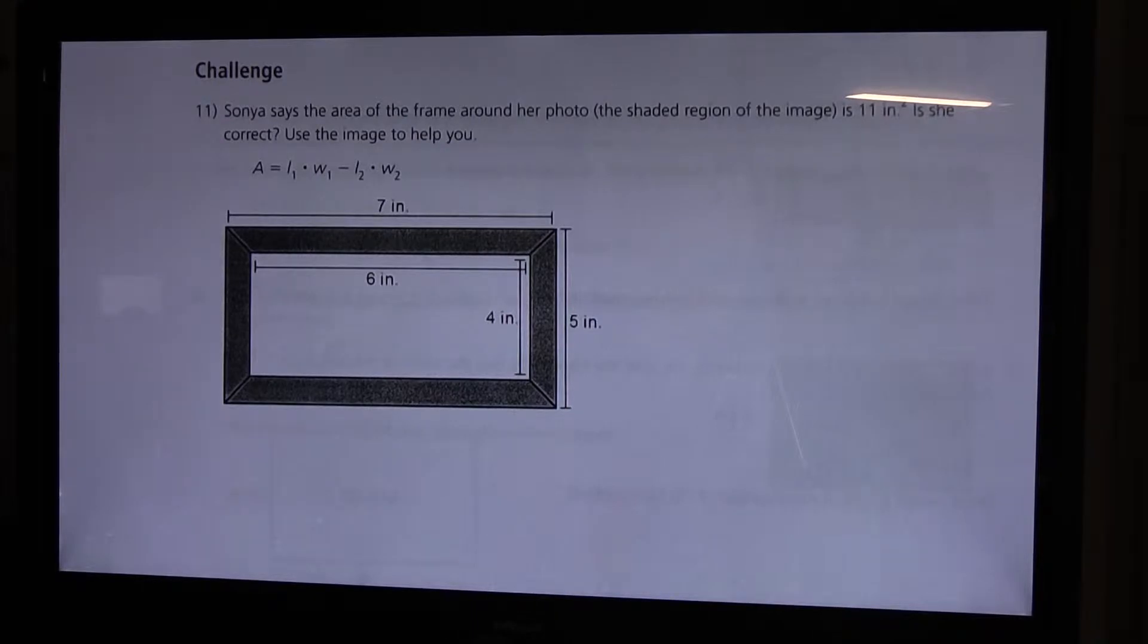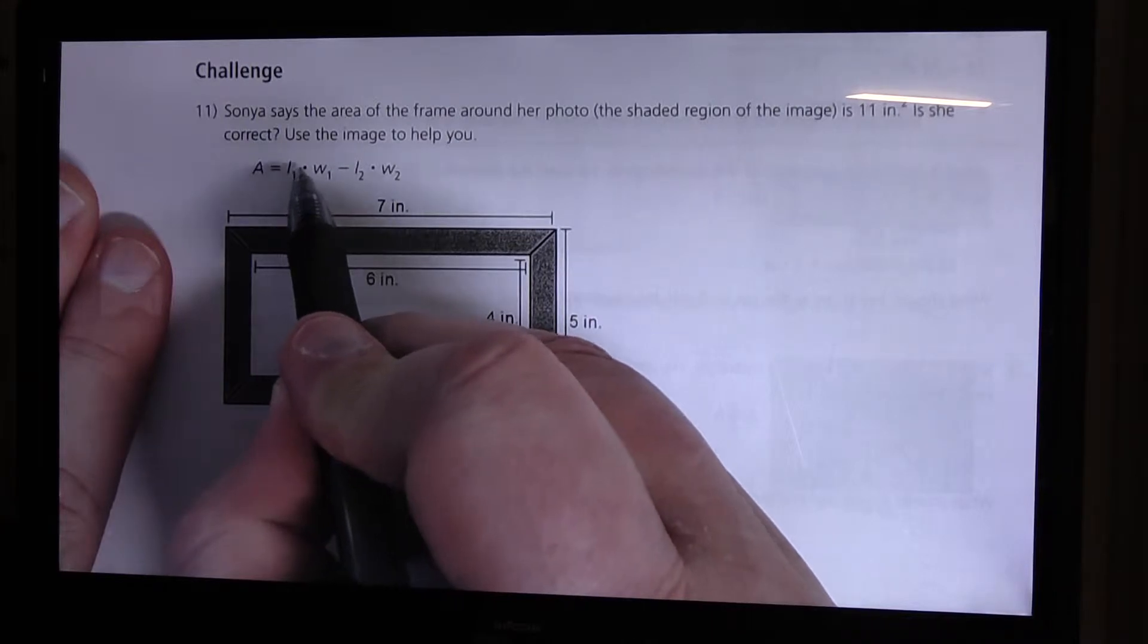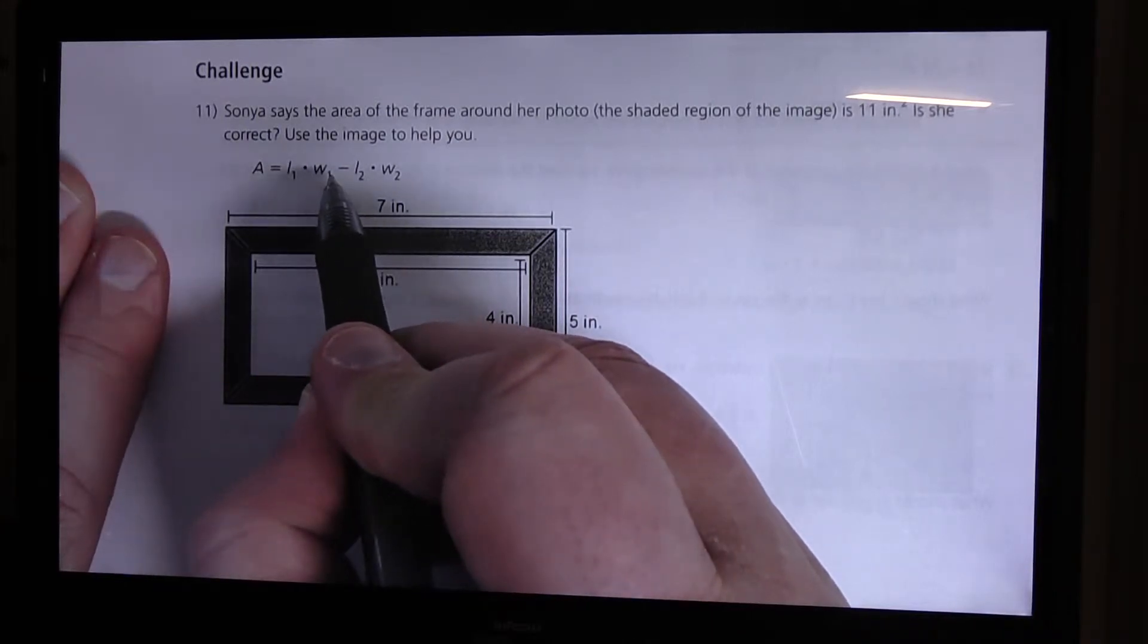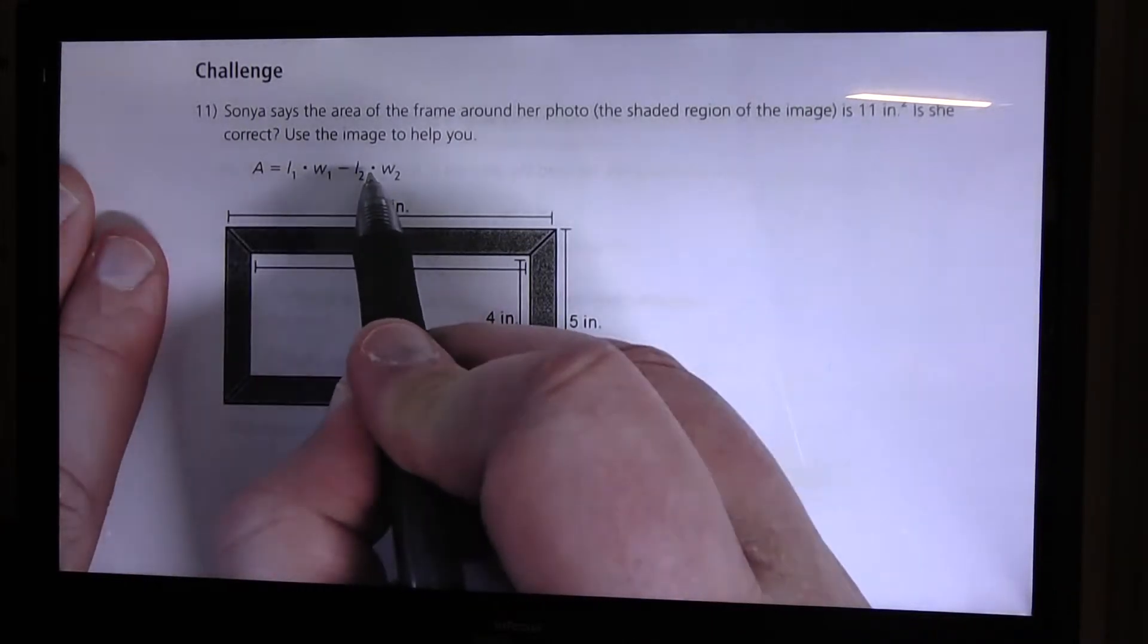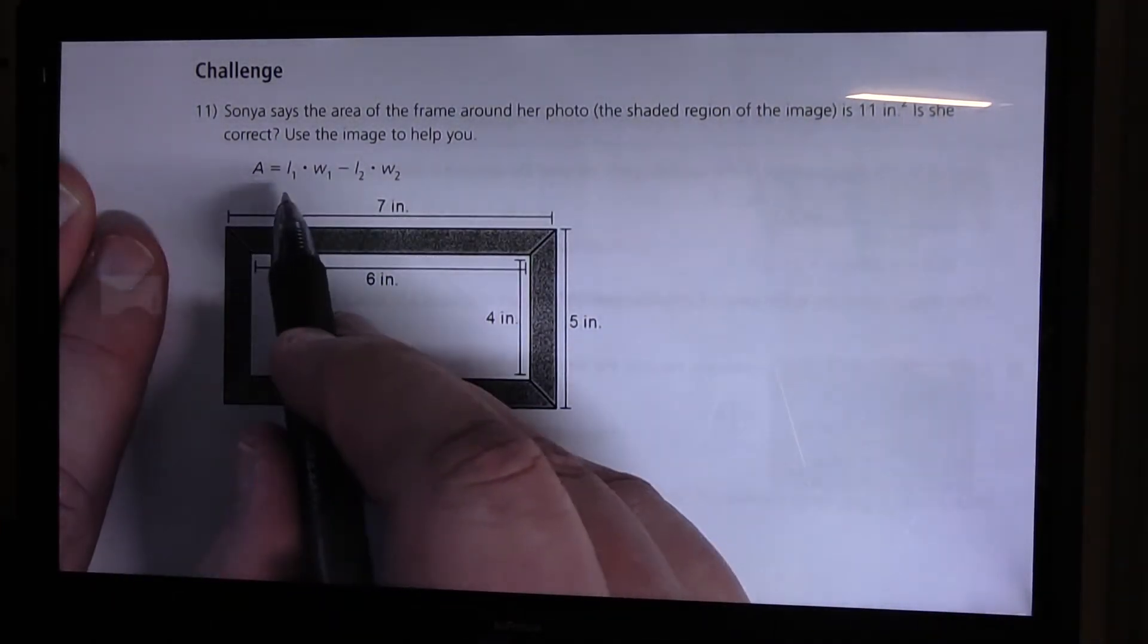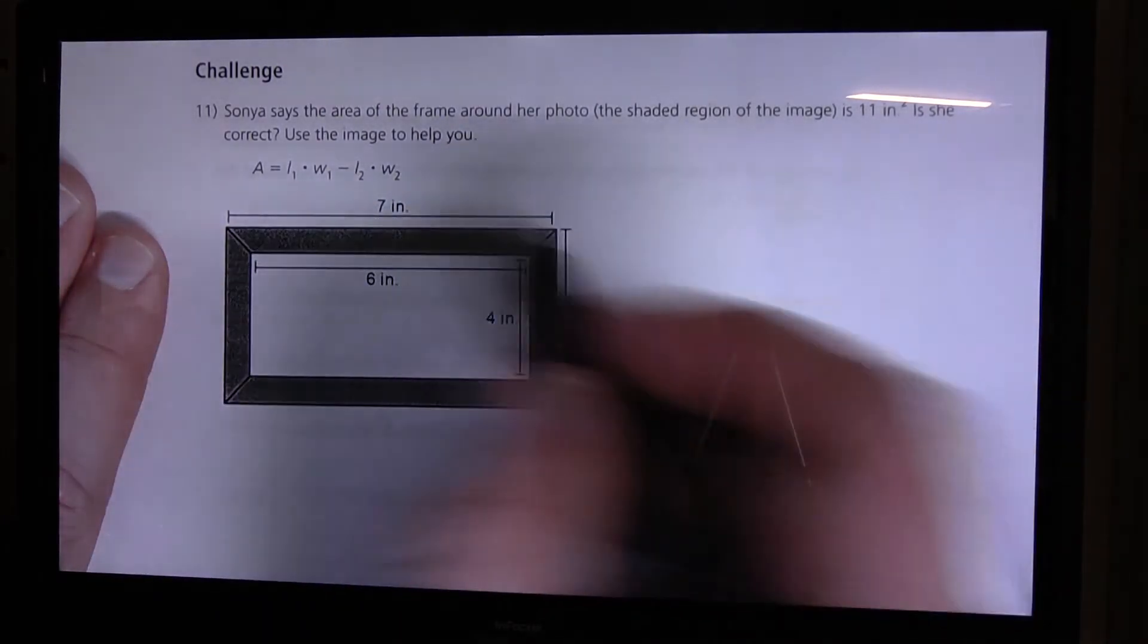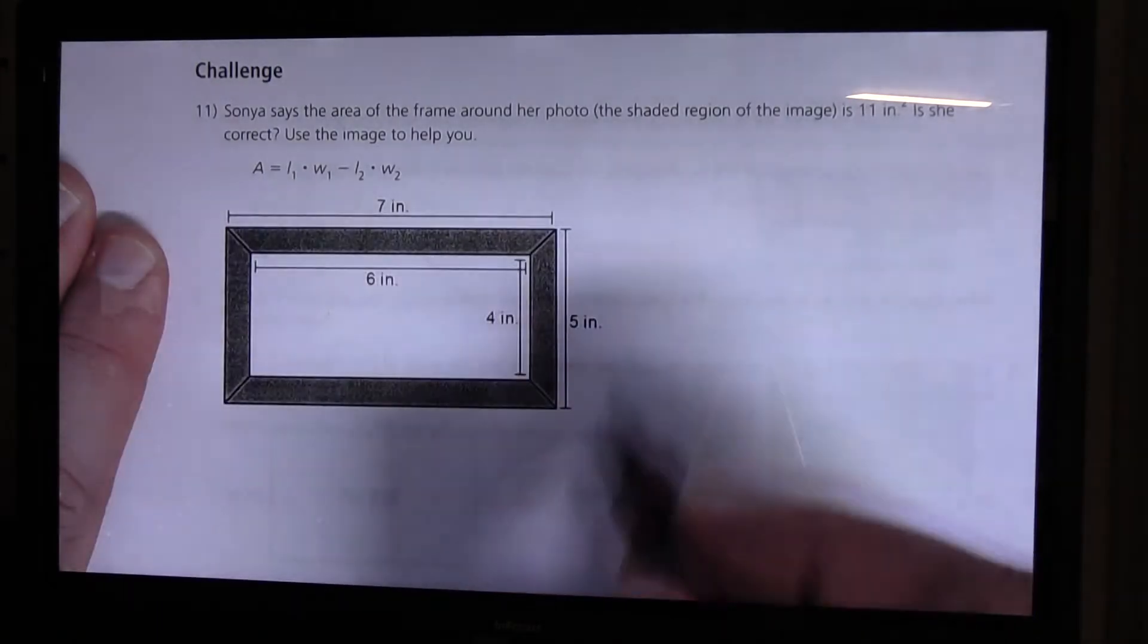Okay let's look at this. She has area equals length 1 times width 1 subtract length 2 times width 2. Okay, the way I see this, the length and width that she's referring to is the outer edge of the picture. The outer edge here.